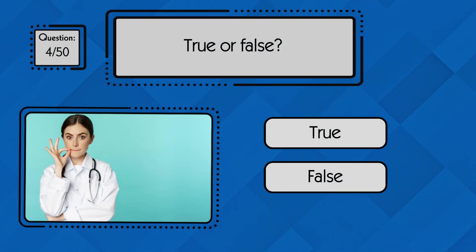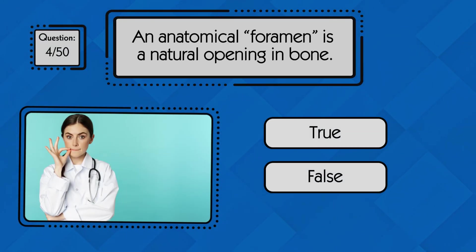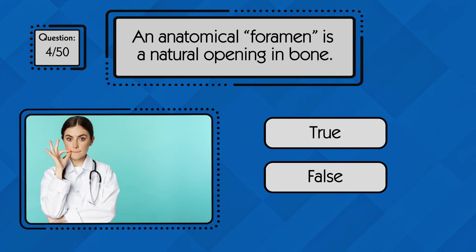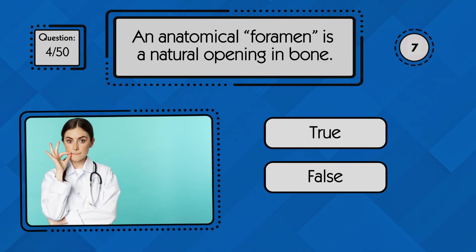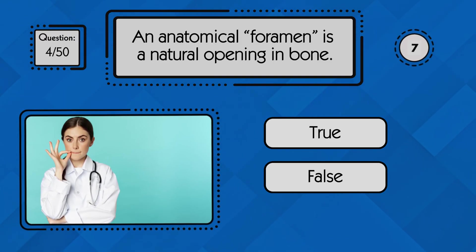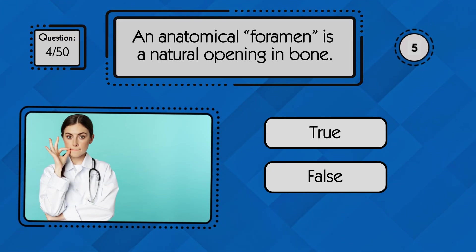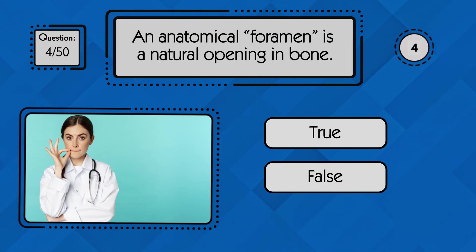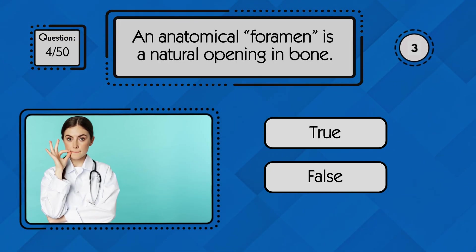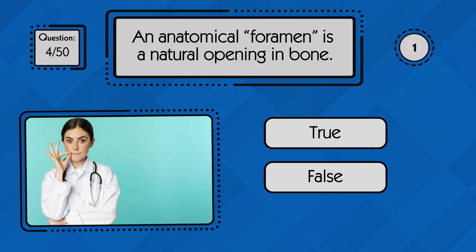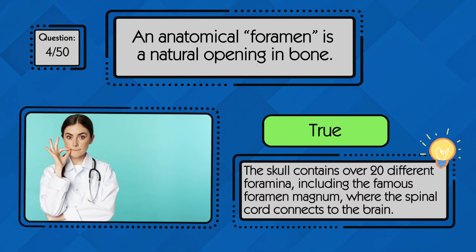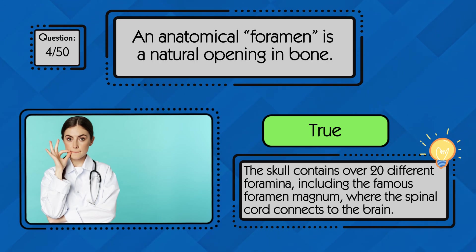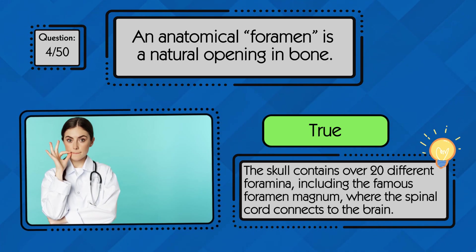True or false: an anatomical foramen is a natural opening in bone. True — a foramen is a natural opening in bone that allows nerves or blood vessels to pass through.